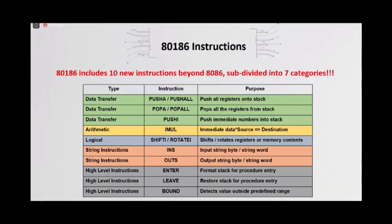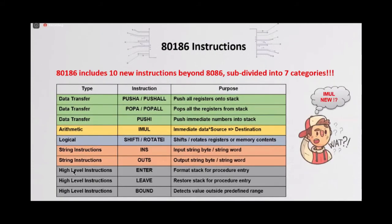So now compared to the 8086, the 80186 has 10 new instructions, which sum up to a total of 126 instructions in the 80186. So again, in this new 10 instructions, there's the instruction IMAL, which was also present in the 8086. So question may arise, where's the new thing here?